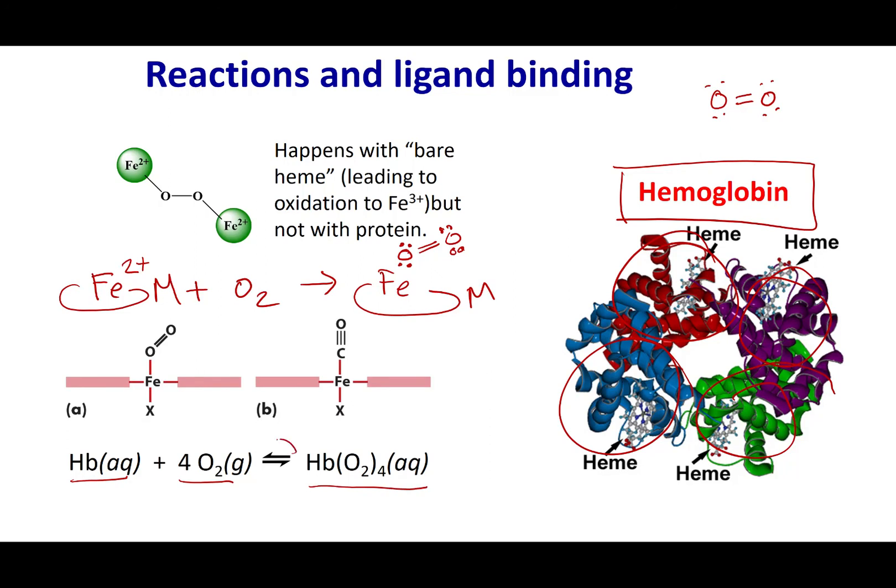So what can happen is hemoglobin can grab four oxygens and those four oxygens become ligands in hemoglobin. Now this reaction is in equilibrium. When there is a lot of oxygen, like in your lungs, well the oxygens attach to the hemoglobin and you make the oxyhemoglobin.